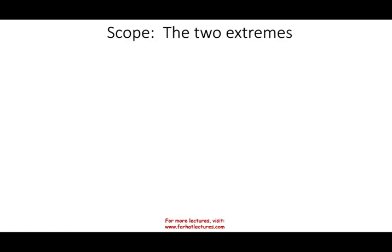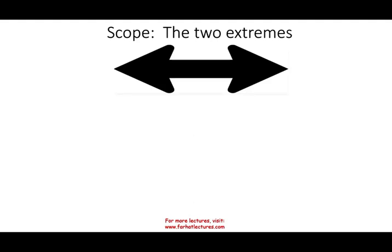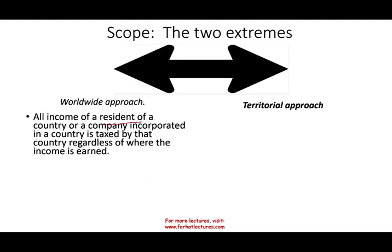The first thing we're going to look at is the scope of tax jurisdiction. We're going to be looking at two extremes: the worldwide approach and the territorial approach. Simply put, what scope does a government have in taxing you? Under the worldwide approach, all income of a resident of a certain country, or a company incorporated in that country, is taxed by that country regardless of where the income is earned — it's a very broad scope.